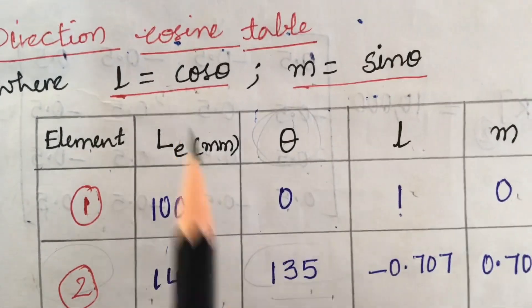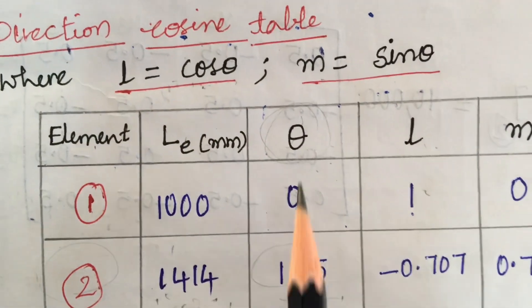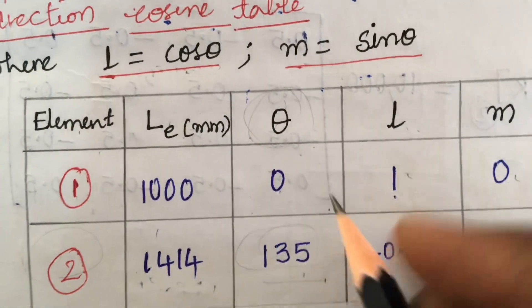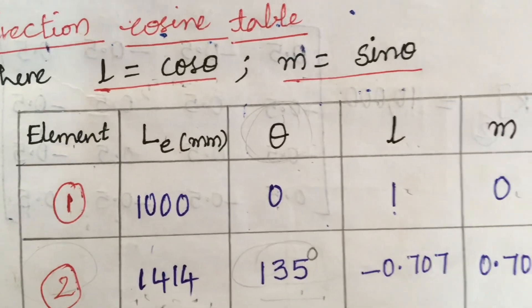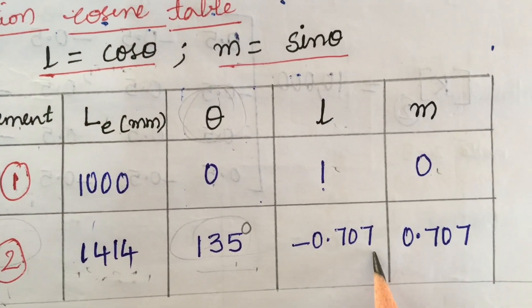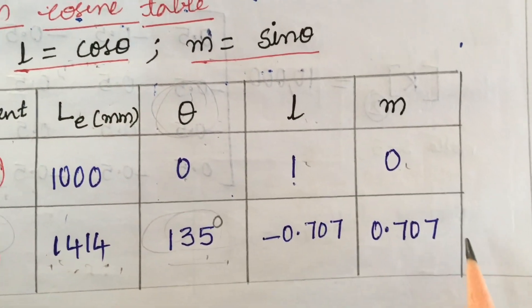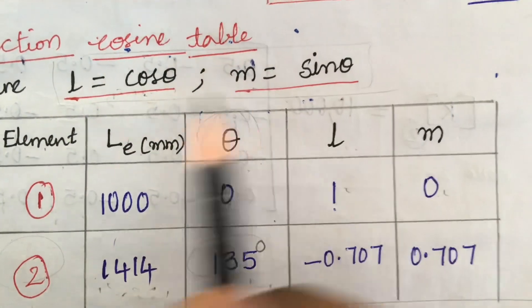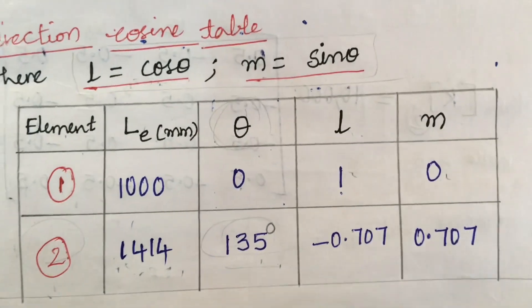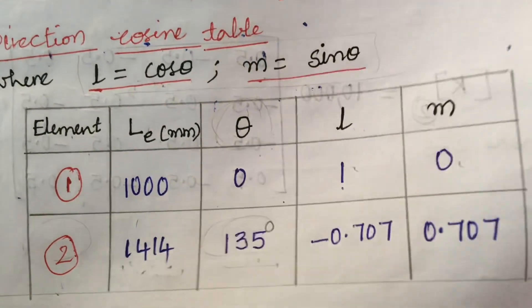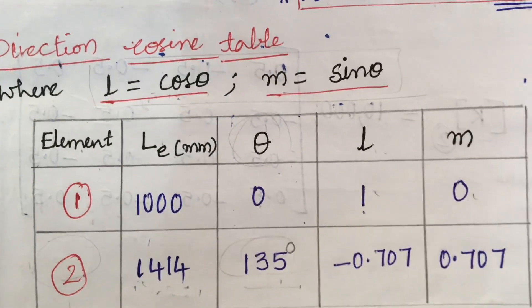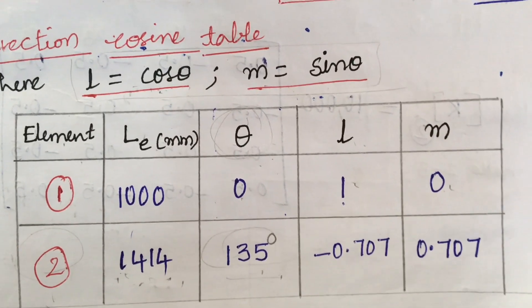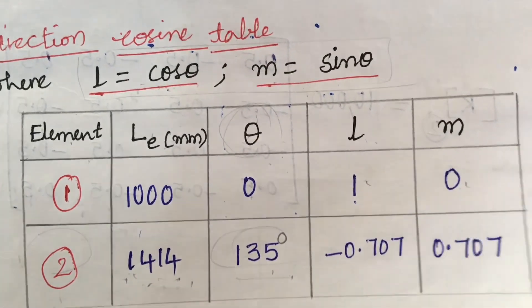So cos theta is l. Substituting 135 degrees in the calculator, you will get l equal to negative 0.707 and m equal to positive 0.707. About l and m, we have discussed this in the stiffness matrix video. If you have not watched that, please go and watch the stiffness matrix for a truss — that is a very important derivation.